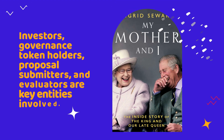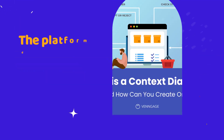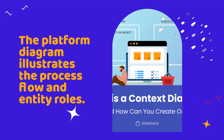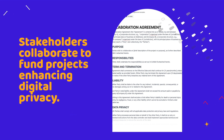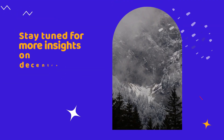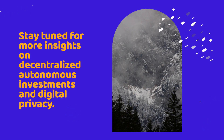Investors, governance token holders, proposal submitters, and evaluators are key entities involved. The platform diagram illustrates the process flow and entity roles. Stakeholders collaborate to fund projects enhancing digital privacy. Stay tuned for more insights on decentralized autonomous investments and digital privacy.